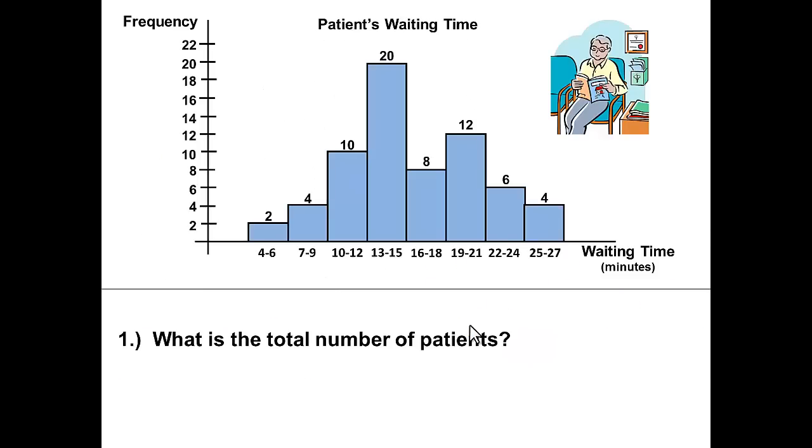I will start with a histogram about patients waiting time. First look at the histogram itself. Notice the frequency along the vertical axis. That's the number that we have. Notice the waiting time in minutes along the horizontal axis. Notice the total in each class. Those are the number of patients that waited this number of minutes. Make sure that you understand your histogram before you begin answering questions on it.